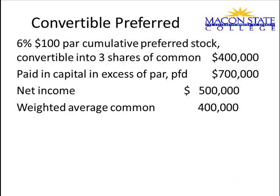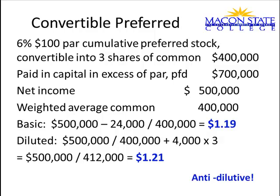Now I'm going to change one of the assumptions — how many shares it converts into. Freeze your frame and work this one, then start it up and check your work. This one is anti-dilutive: when you stop taking the preferred dividends out and add the new shares to the denominator, EPS gets bigger instead of smaller. So basic earnings per share is $1.19 and diluted earnings per share would also be $1.19 because you'd leave out this particular security.